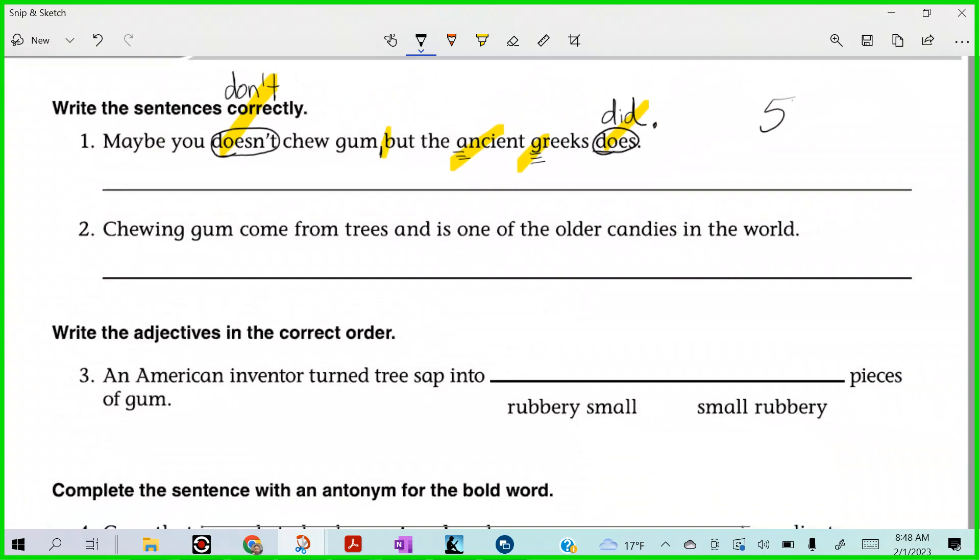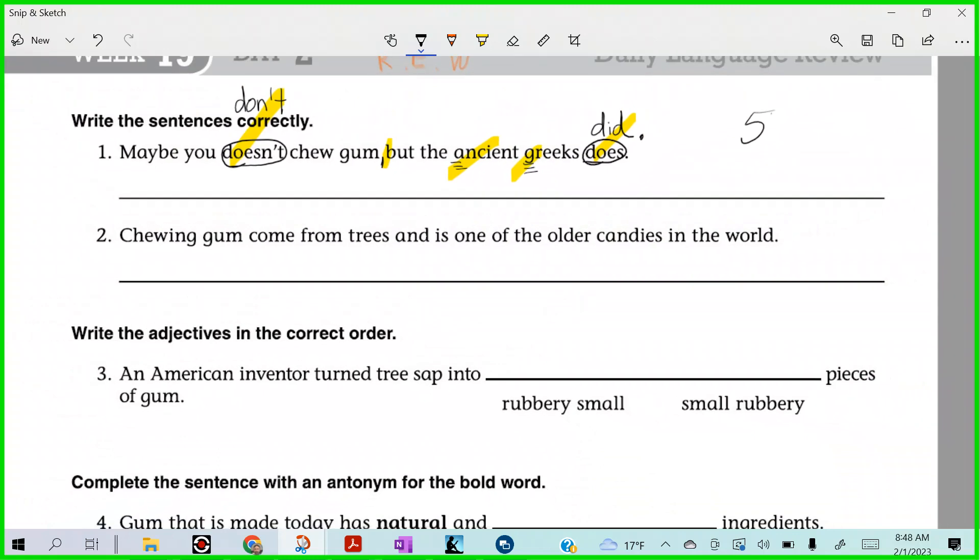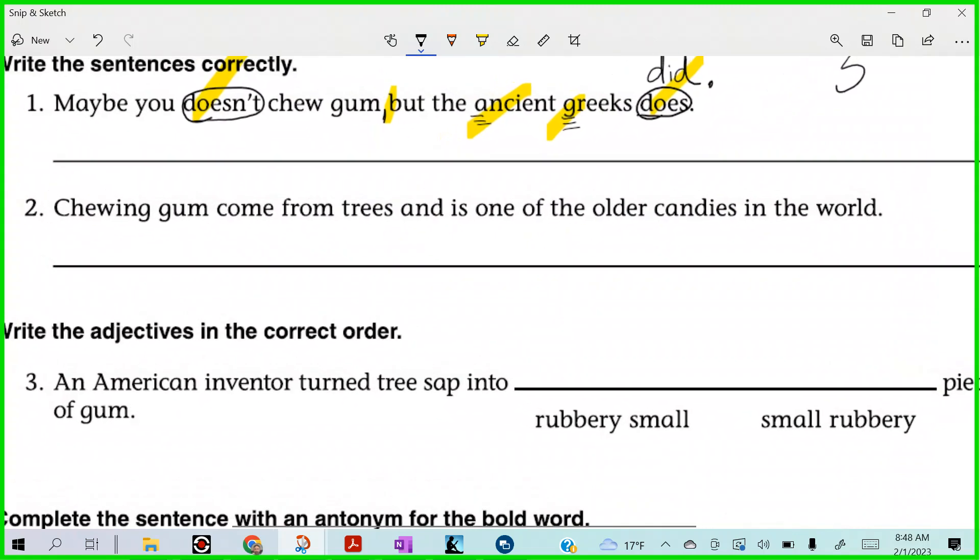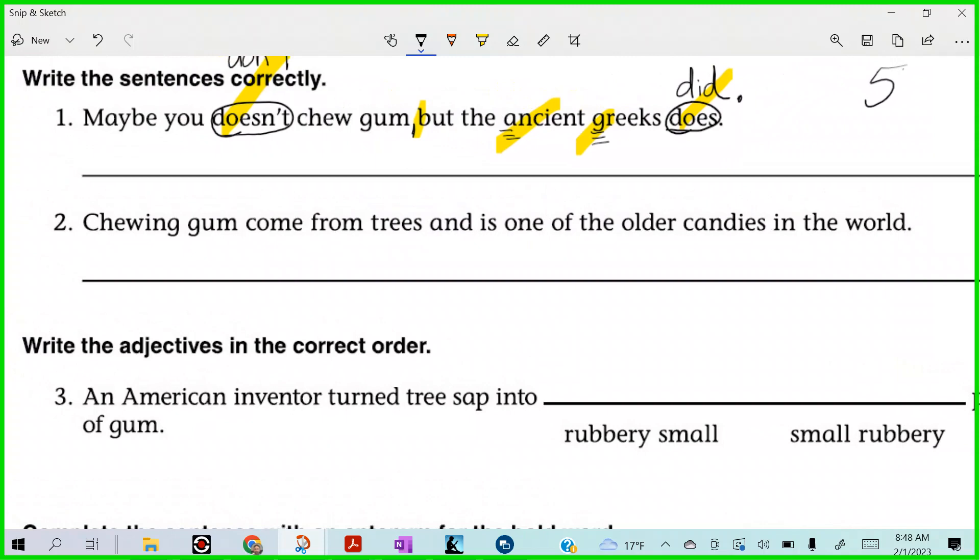Ready? Chewing gum come from trees and is one of the older candies in the world. Well, we have an ending suffix issue with one of these. It needs to be superlative. Can you spot it, Brady? Chewing gum comes from trees and is one of the older candies in the world. Kayla. Yeah. Older is comparative. We need superlative, right? So, spell it. Yeah. Chewing gum comes from trees and is one of the oldest candies in the world.